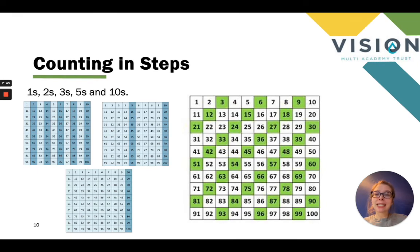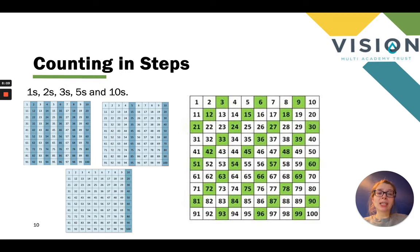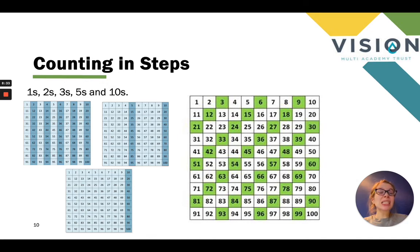Looking at counting in steps in year two — children should be able to count up in ones, twos, threes, fives and tens from any given number. The new addition here is counting up in threes. On the right hand side, I've highlighted the multiples of three on a number grid. It's important that children can count from any given number — it might be starting at five and counting up in threes, or starting at 33 and counting up in threes. Skip counting in many different ways, starting from lots of different numbers, builds confidence through repetition.